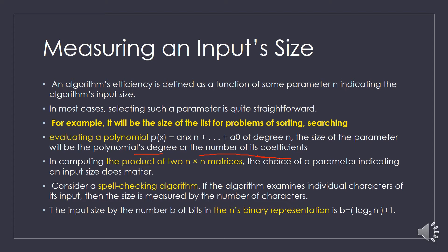If you consider the product of an n×n matrix, then the input size parameter is n×n. If you consider a spell checking algorithm, then the size is measured by the number of characters. If you consider the problem of finding the number of bits in n's binary representation — for example, for 2 the binary representation is 10, so the total number of bits is 2 — the input size is based on the number of bits.